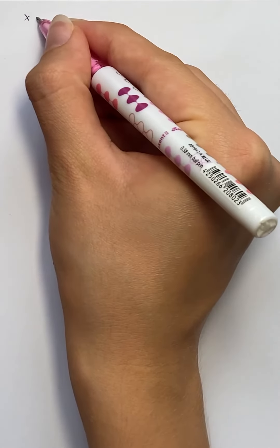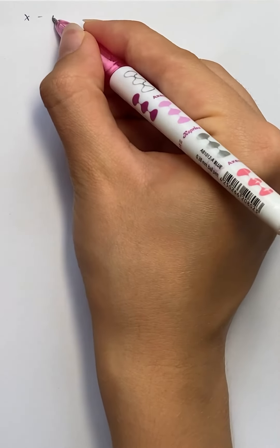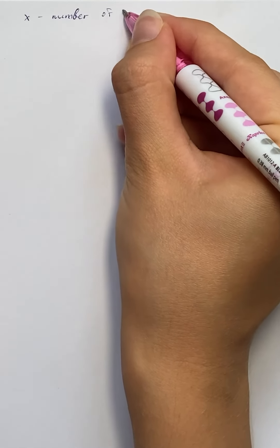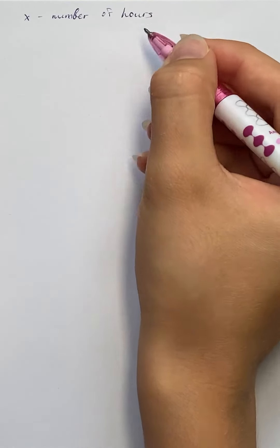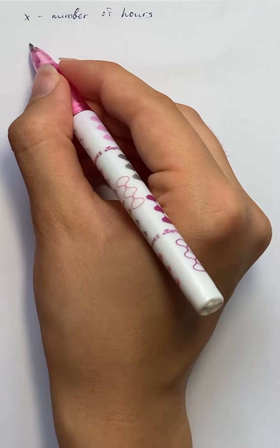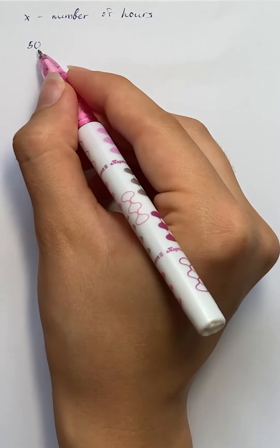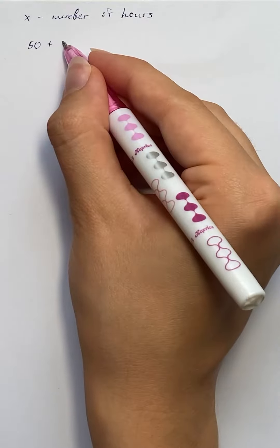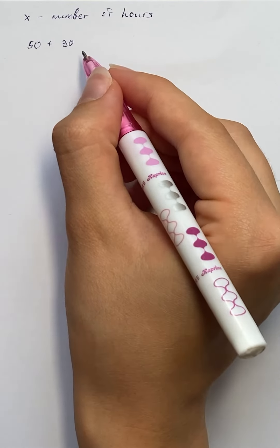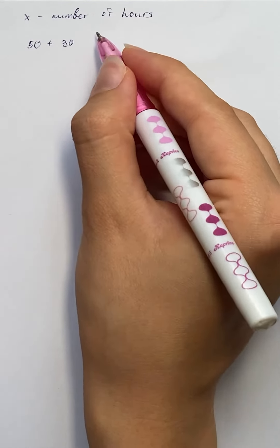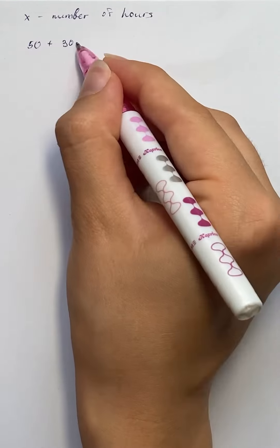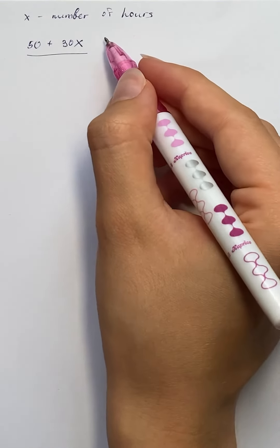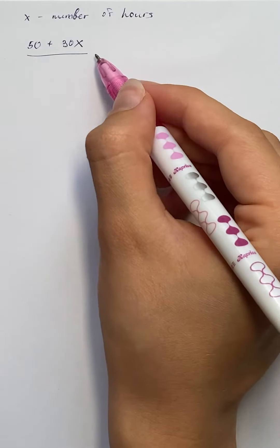Let x be the number of hours. The total charge is $50 which the technician charges per visit, plus $30 per hour times the number of hours x. This expression describes the service charge for one household.